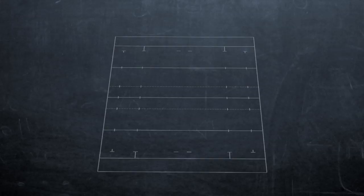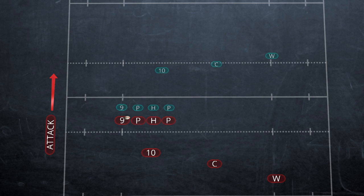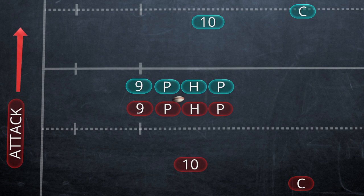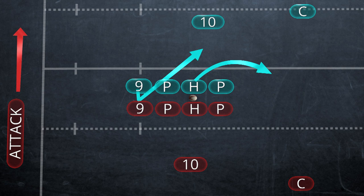Back to the chalkboard: with the attack going up the field, this is a scrum formation with a prop, hooker, and prop contesting the scrum, and the nine putting the ball in. The hooker defends by going left, with the nine either pressing his opposition or dropping to the backfield.